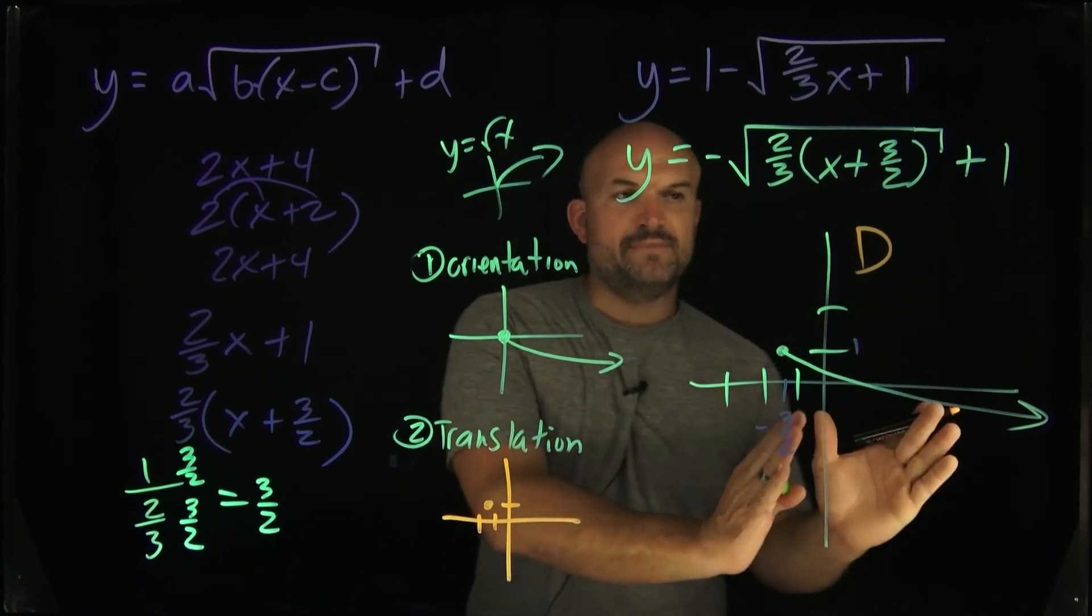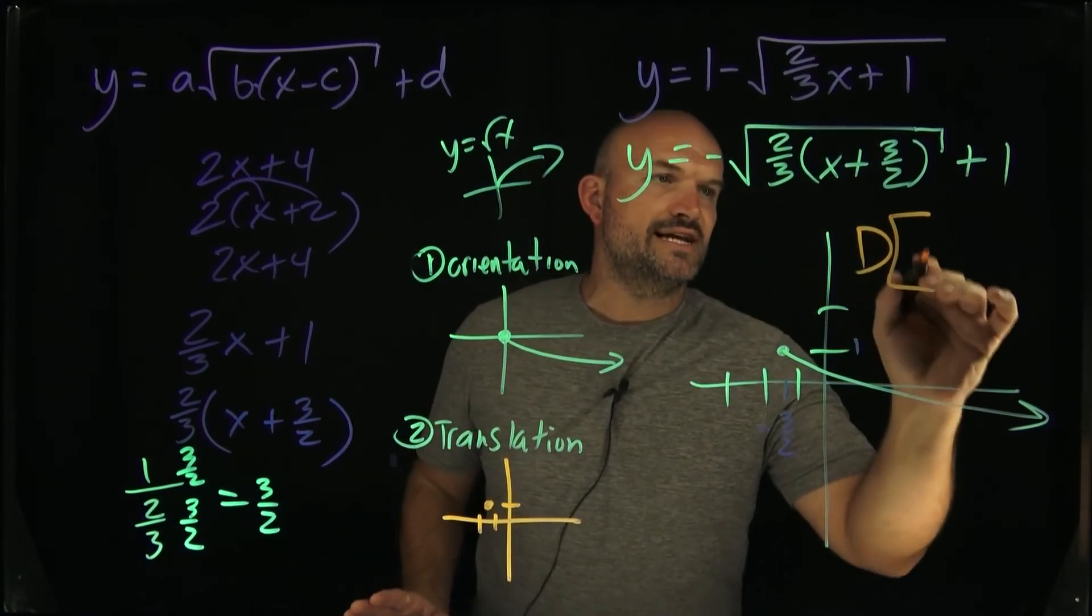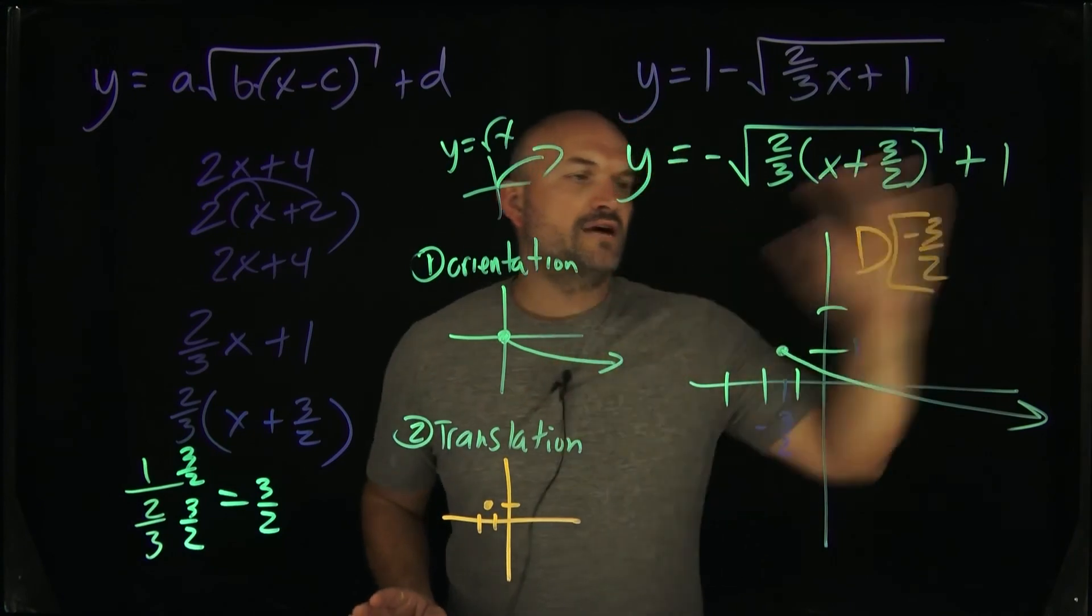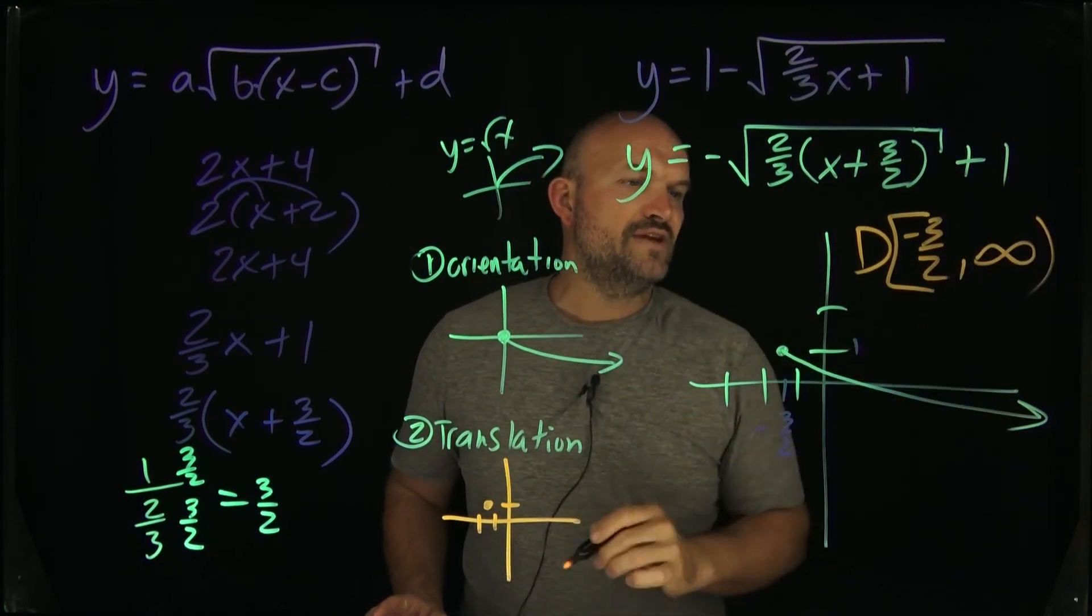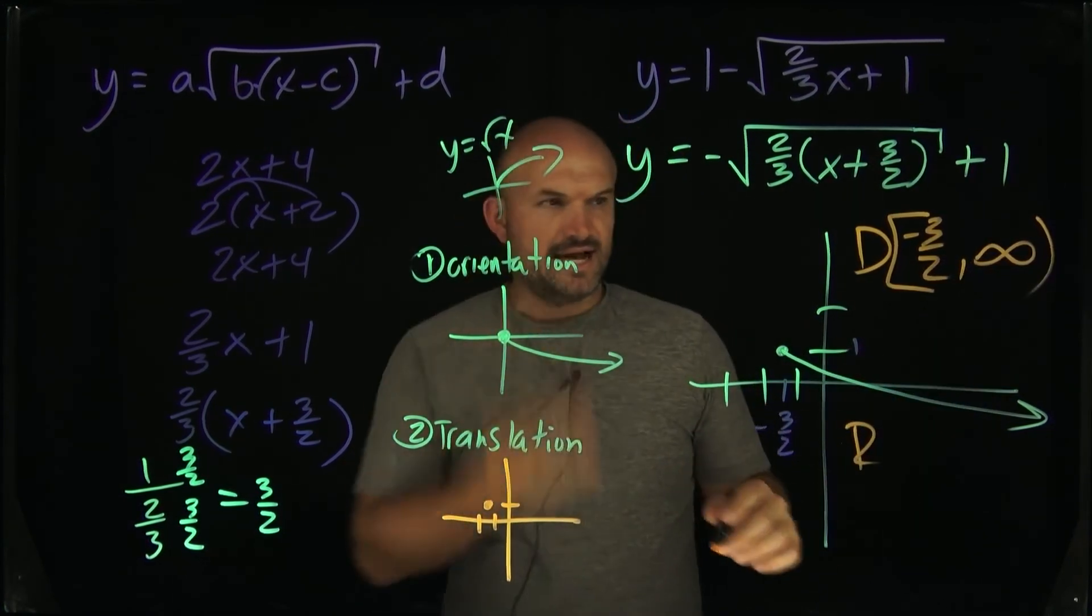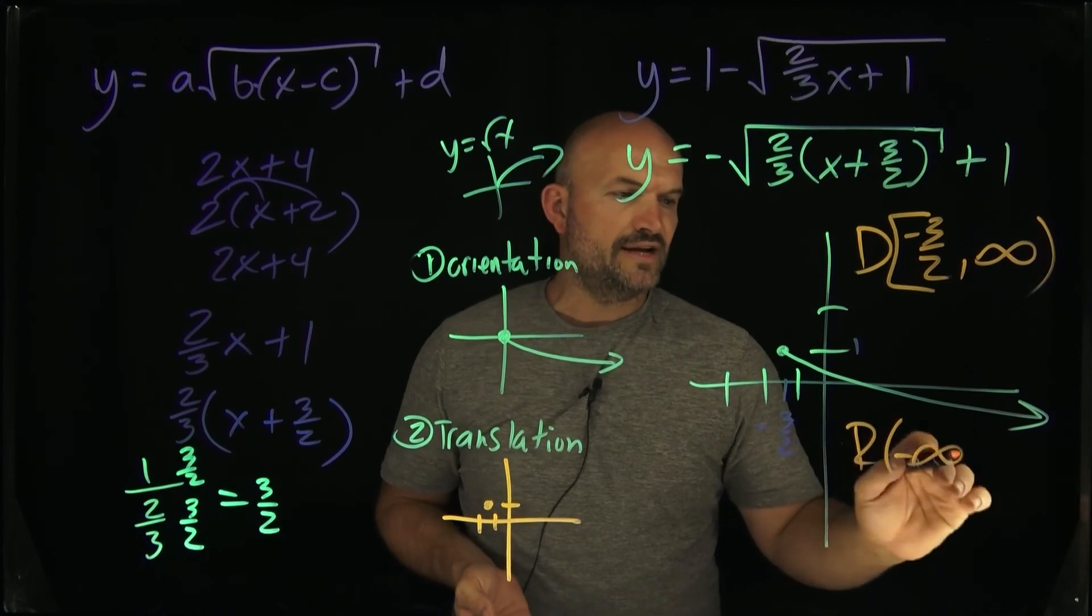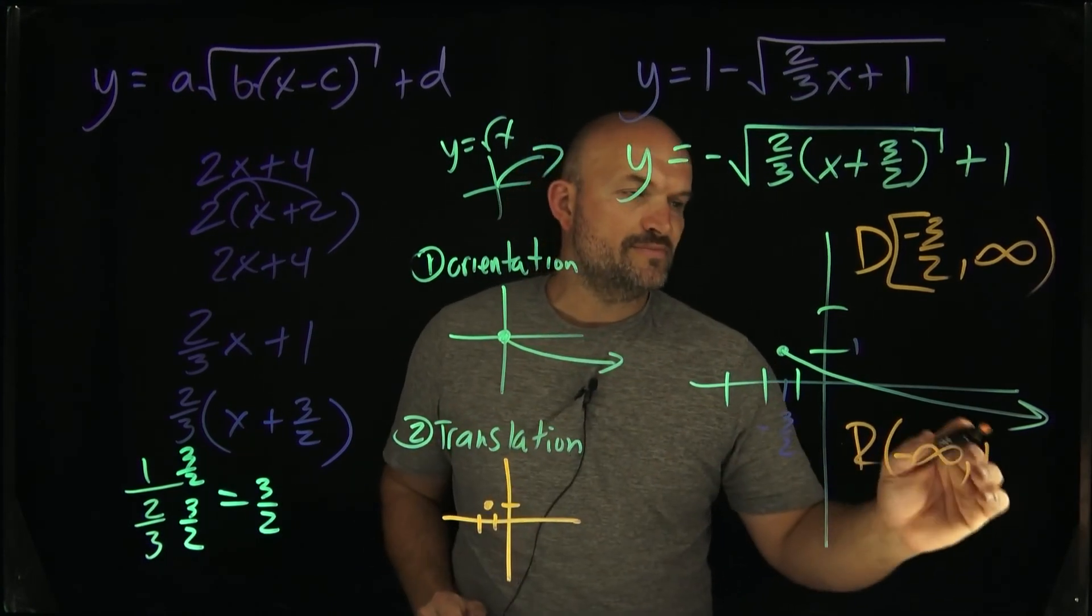All right. So let's figure out what my domain is. Domain is going to be basically how far left the graph is going, which in this case is going to be a negative three halves, how far to the right it's going, which is going to be positive infinity. And then the range is going to be basically how low does the graph go, which is going to be from negative infinity to how high is it going to go, which is going to be a positive one.